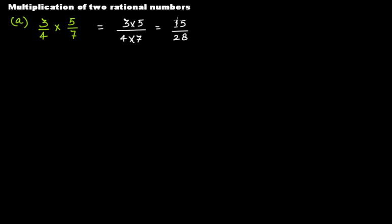Now check whether there is any highest common factor between 15 and 28 if you want to simplify this fraction. Even this is correct, but if you want to further simplify it, check whether there is any highest common factor between the numerator and the denominator. In this case there is no highest common factor, therefore you don't need to simplify it.